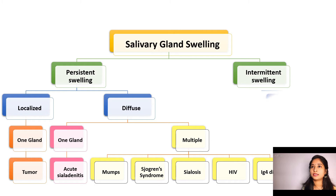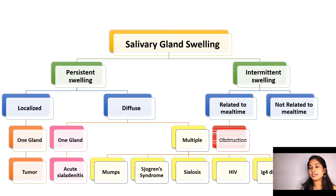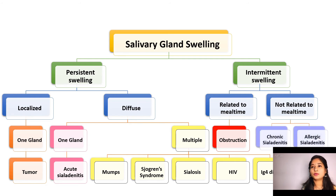Coming to the intermittent swelling, it can either be related to the mealtime or it will not be related to the mealtime. If the swelling comes during the mealtime, then it would mostly be a cause of obstructive origin — the salivary gland duct would have been obstructed. If it is not related to the mealtime, either it would be a chronic sialadenitis or allergic sialadenitis.